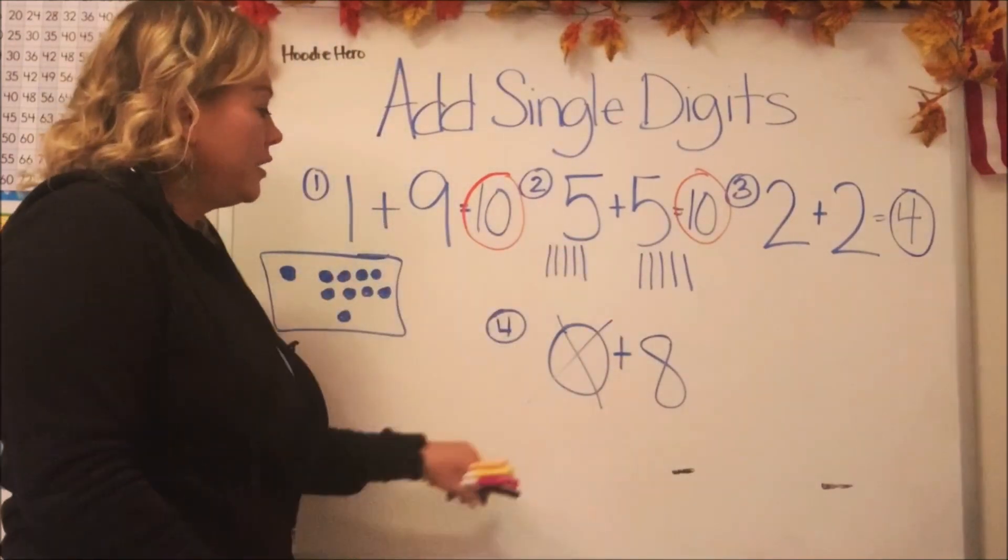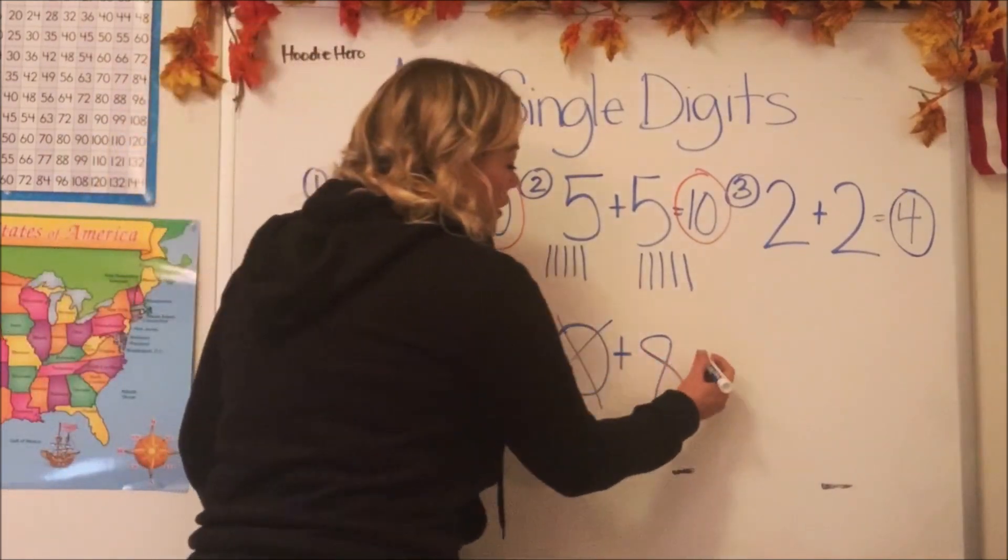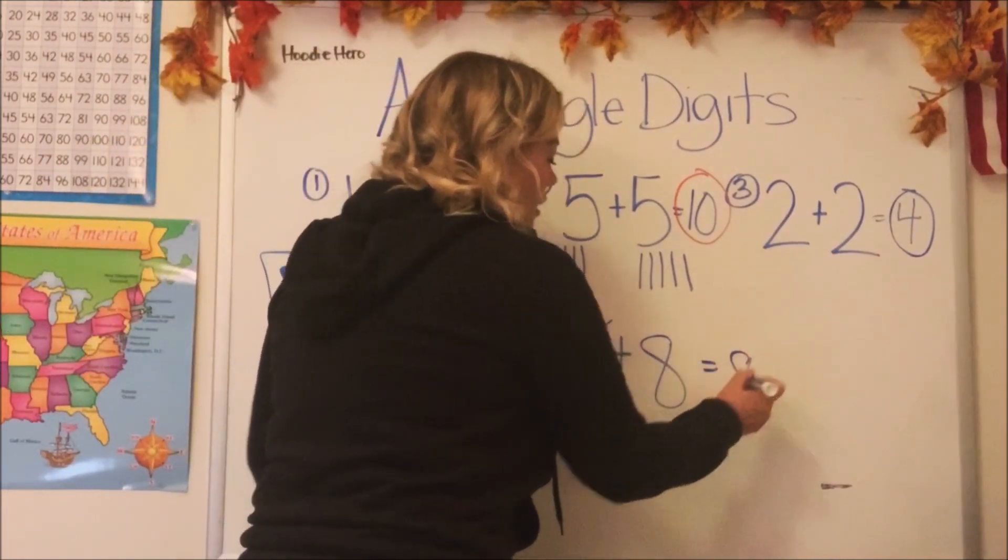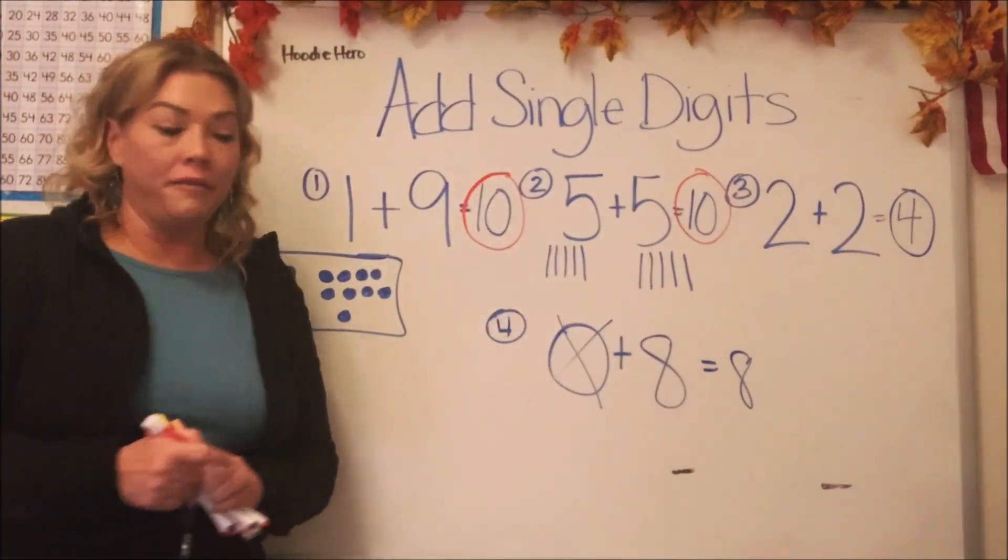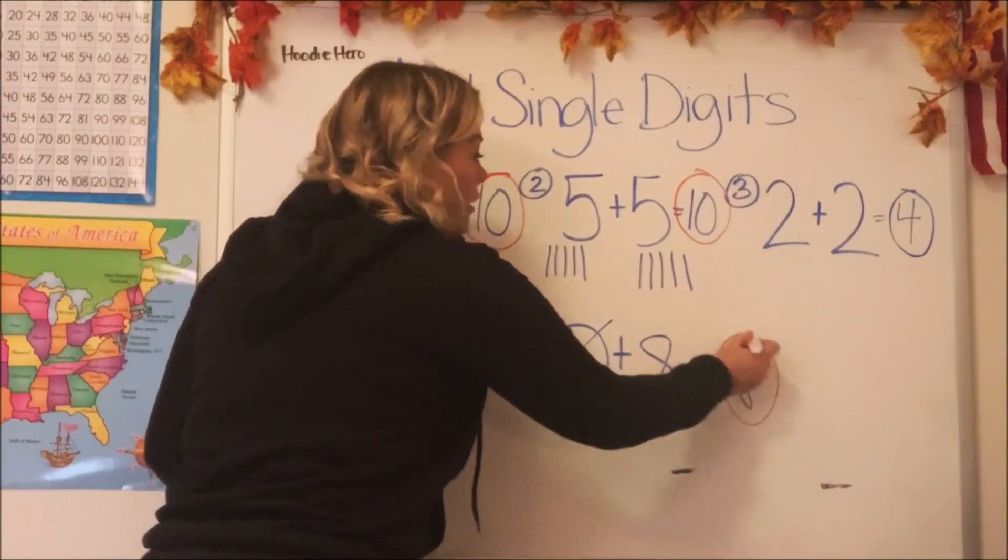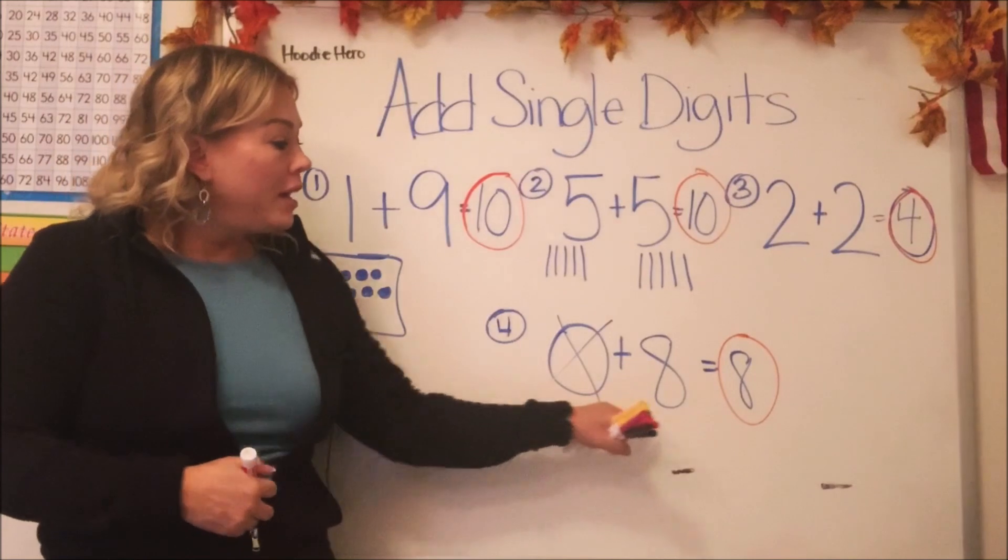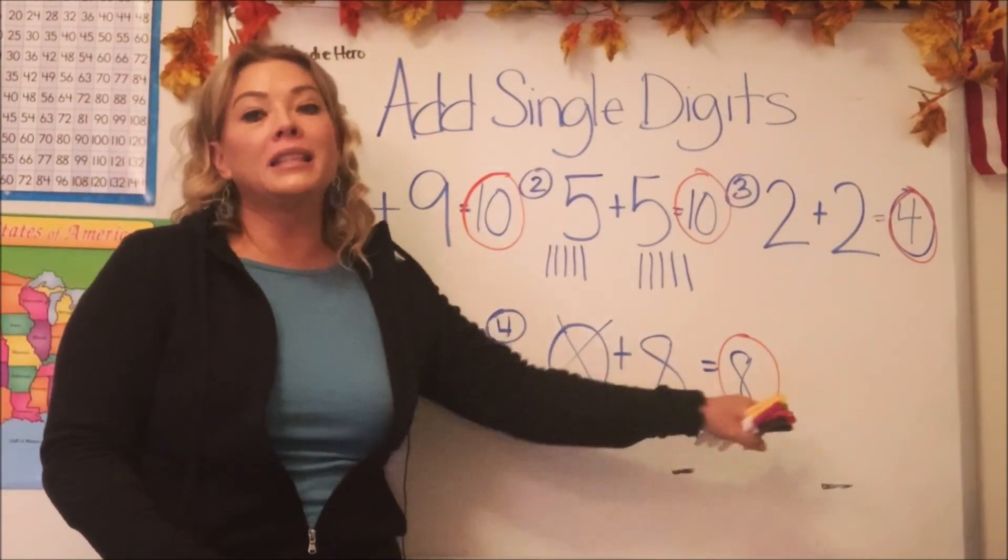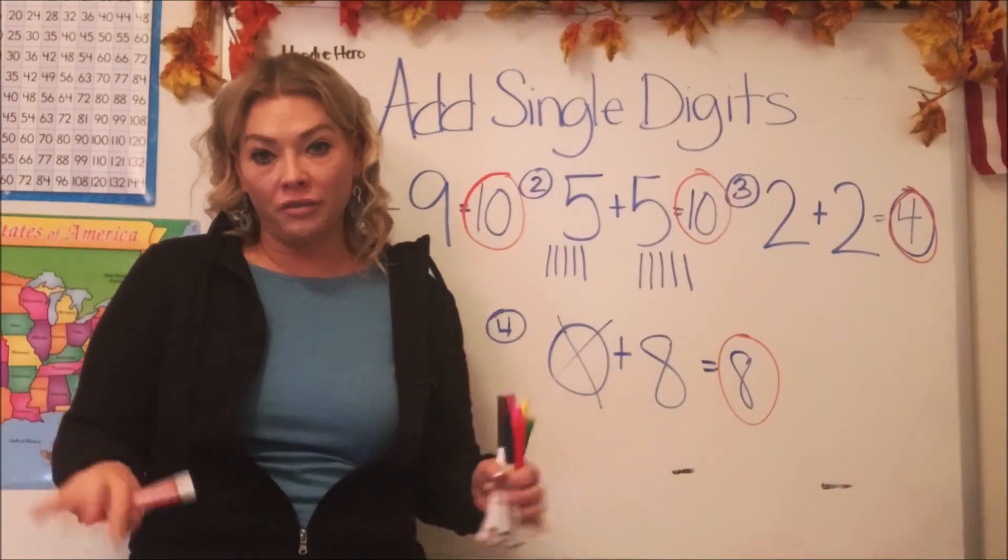Zilch, nada. So nothing plus eight is still going to be eight. So there's our answer. Nothing plus five would still be five. Nothing plus 10, we forgot to do this in red, would still be 10. So when you add zero to any number, the answer is going to be that number because zero means zilch.